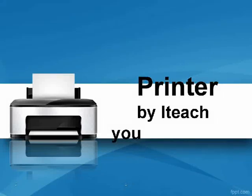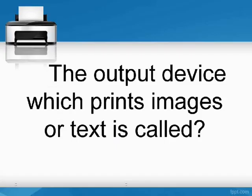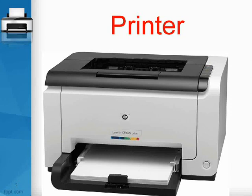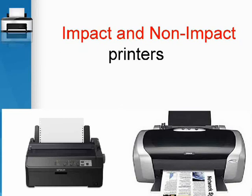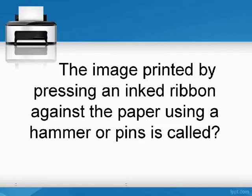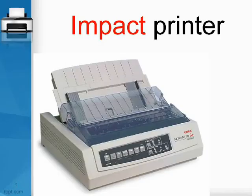The output device which prints images or text is called a printer. There are two types of printers: impact and non-impact printers. The image printed by pressing an ink ribbon against the paper using a hammer or pins is called an impact printer.